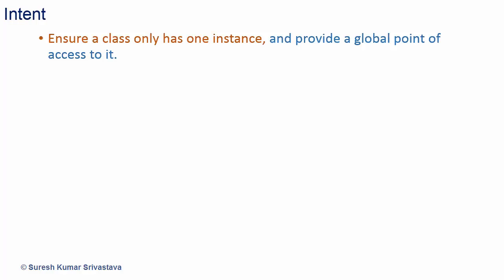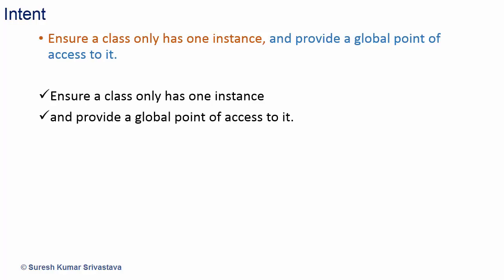So we have two things: ensure a class only has one instance, and provide a global point of access to it.